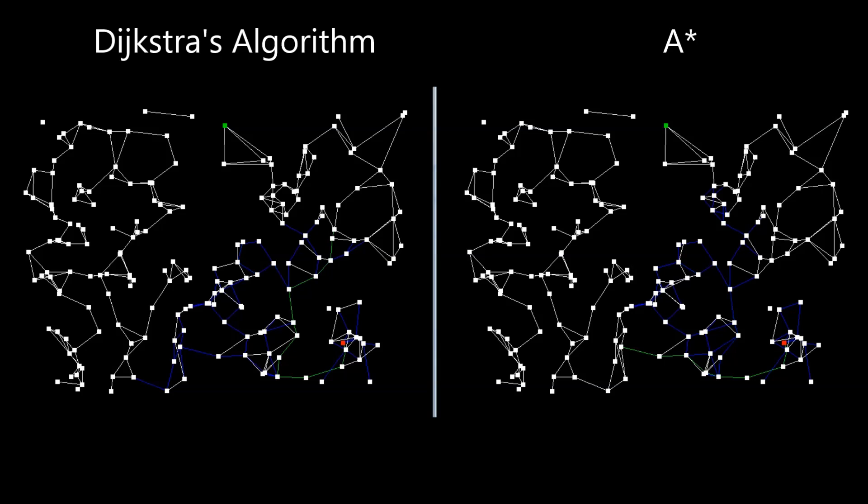Traversing of nodes is done in an ascending order, from shortest to longest distance traveled from the start. This way the algorithm will always find the best path, instead of the detours.